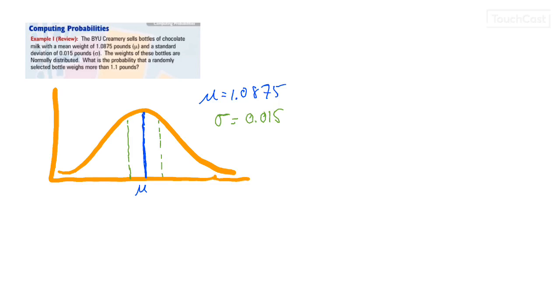So now that we have our normal curve in our table, what it's asking here is what is the probability that a randomly selected bottle weighs more than 1.1 pounds? So we know that mu is 1.075, which is here.